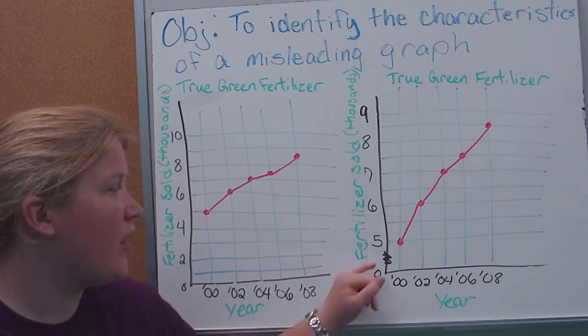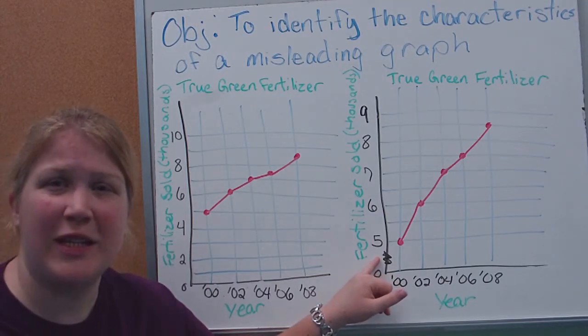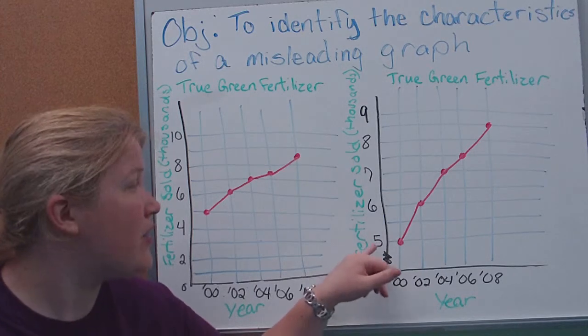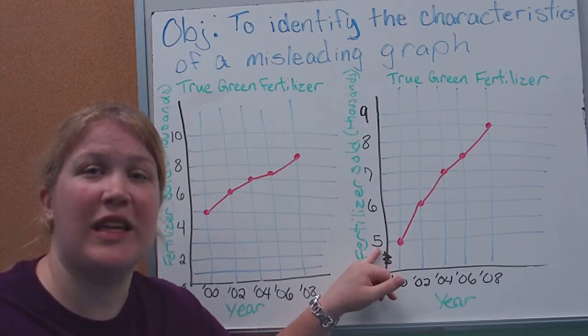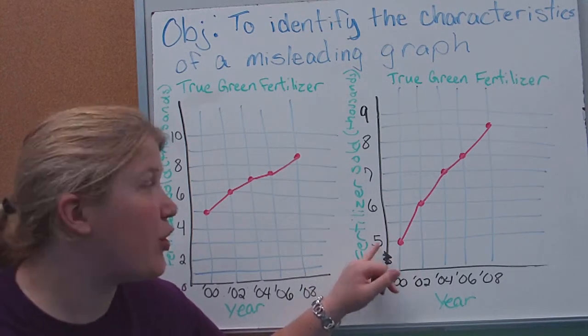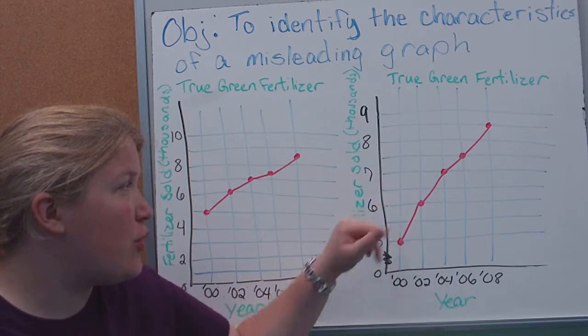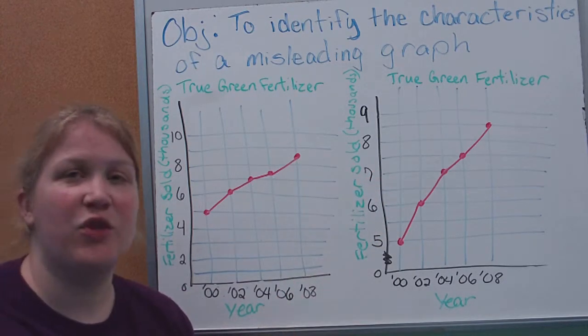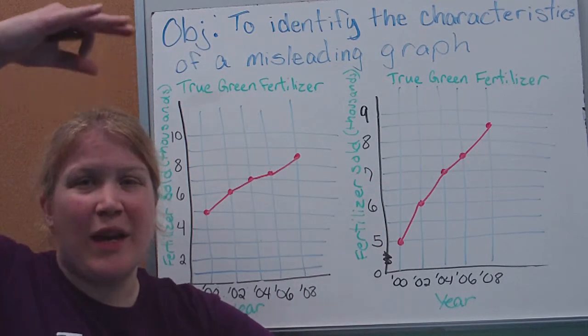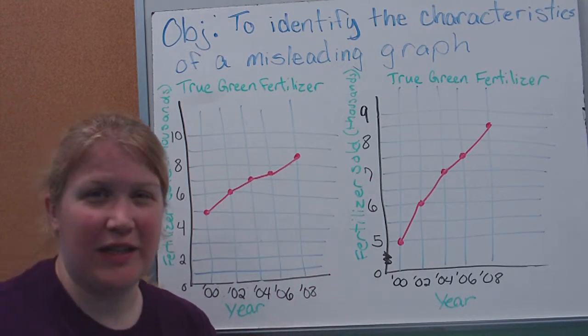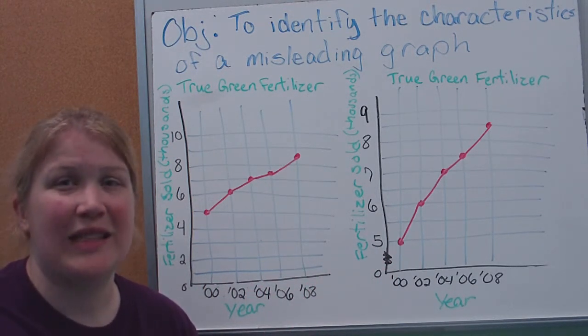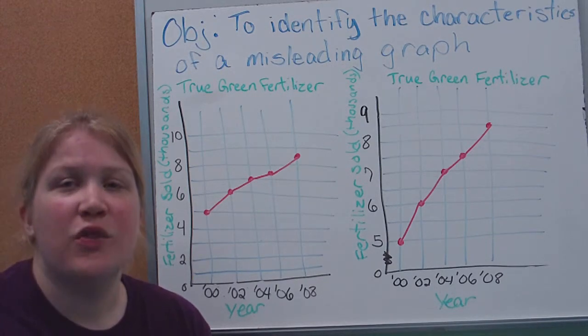If you look over here, we talked about this little mark here which means it's a broken graph. I have a broken graph here. I didn't start at zero, I started at five. And you'll notice the interval I chose is also larger. Two spots is only one unit. So this would be five and a half, six, six and a half. So you'll notice I've spread my numbers out and I haven't started at zero.